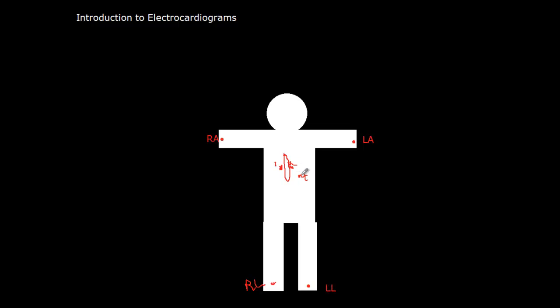And you put V3 diagonally between V2 and V4. So you need to put V4 first before you put V3. V4, V5, and V6 are all going to be in a horizontal line.